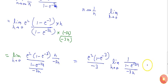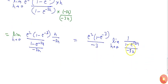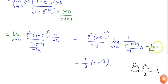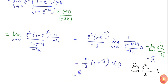Using the standard limit lim(x→0) (e^x - 1)/x = 1, I write the denominator term as minus of lim(h→0) (e^(-3h) - 1)/(-3h), which equals 1. Applying this, the final answer is e²(1 - e^(-3))/3.